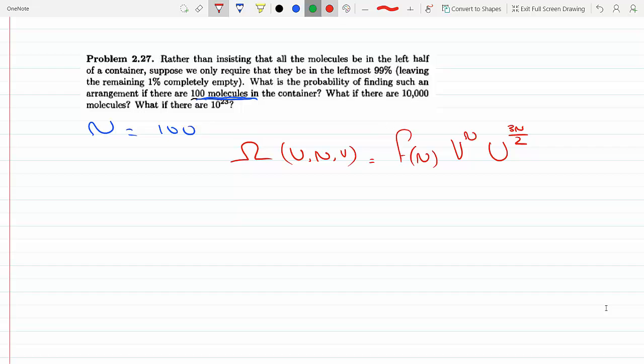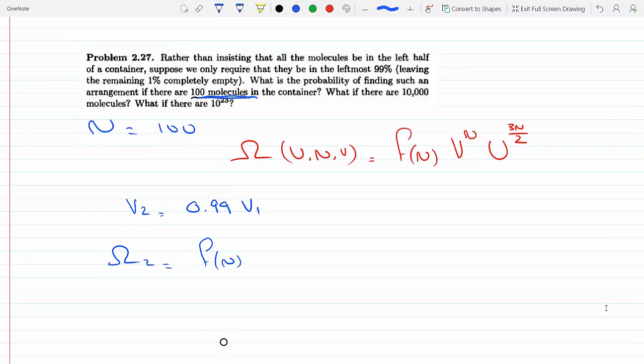So V2 in our case will equal 0.99 V1, that's 99 divided by 100 V1. Now our new multiplicity will be a function of N, 0.99 V1. This will not change since we didn't change the number of molecules, and now we have 0.99 V1.